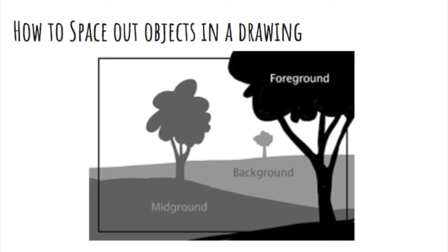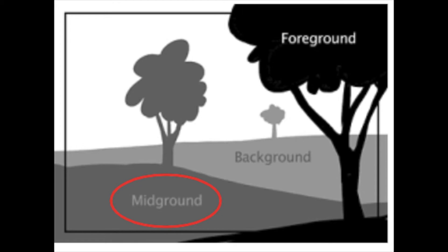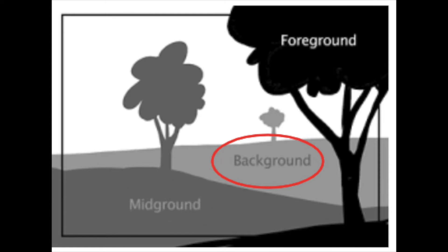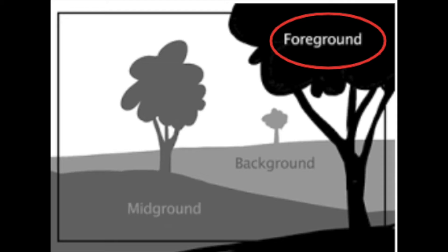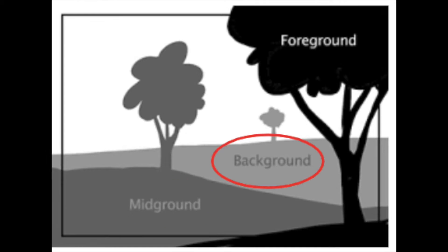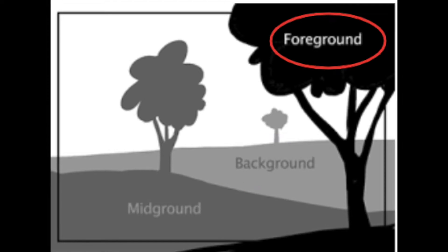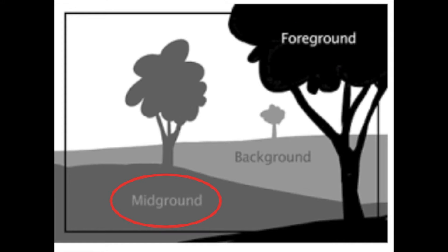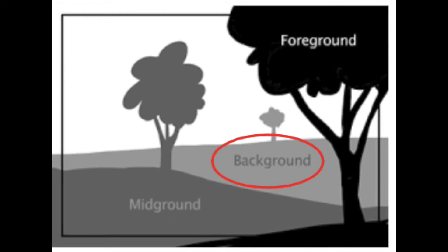We're going to talk about something called foreground, mid ground, and background. The foreground in a drawing is the front, the very front. I like to remember foreground by remembering that foreground is in the front — they both start with the letter F. Mid ground is in the middle of your drawing or painting. The background is all the way in the back and it's far, far away. So foreground is close to us and it's in the front, mid ground is in the middle and a little further away from us, and background is far, far, far away.